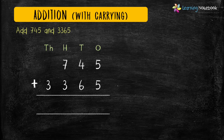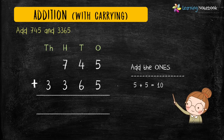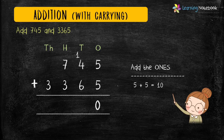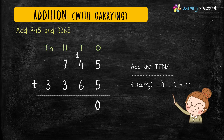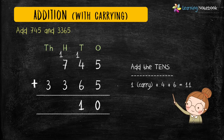Now add the digits at ones place: 5 plus 5 equals 10. Since 10 is a two digit number, we will carry 1 to the tens place and 0 comes in the answer. Next add the digits at tens place: 1 carry plus 4 plus 6 equals 11. Again 11 is a two digit number,